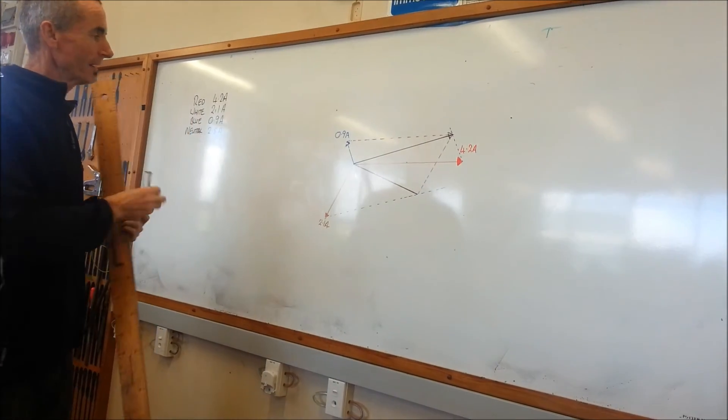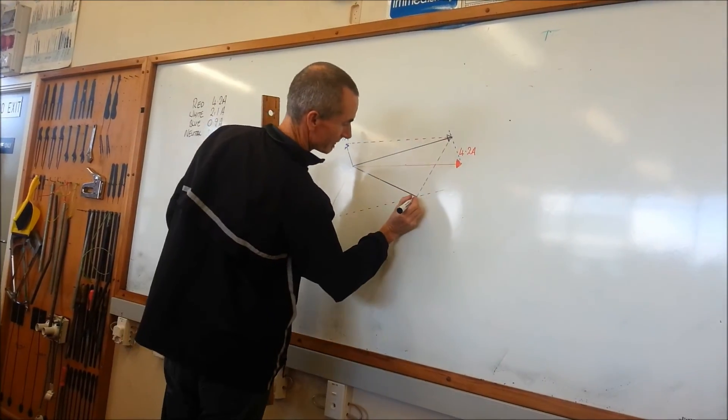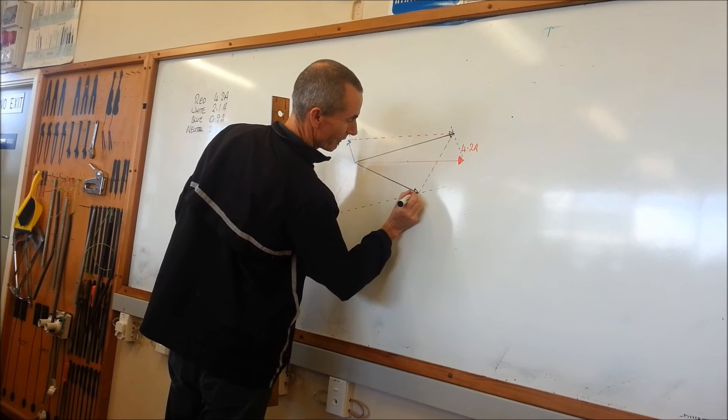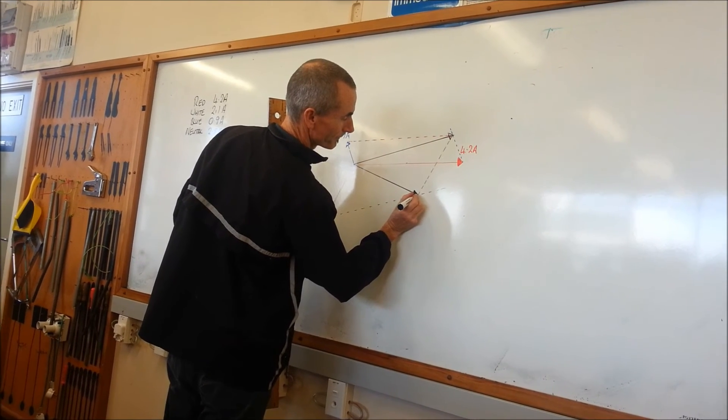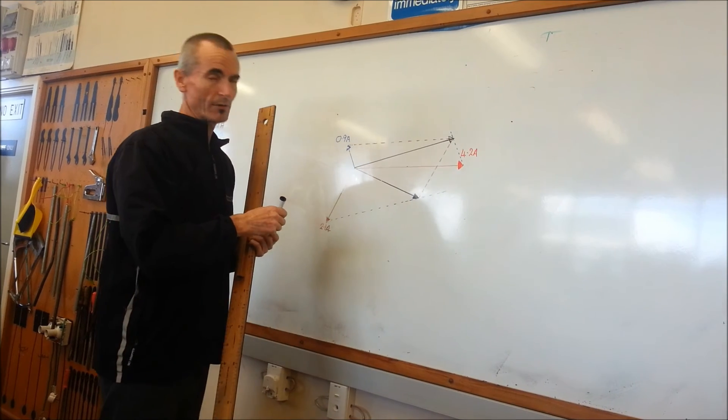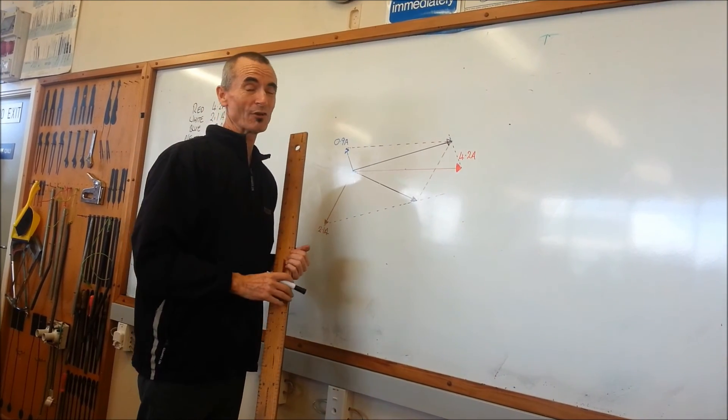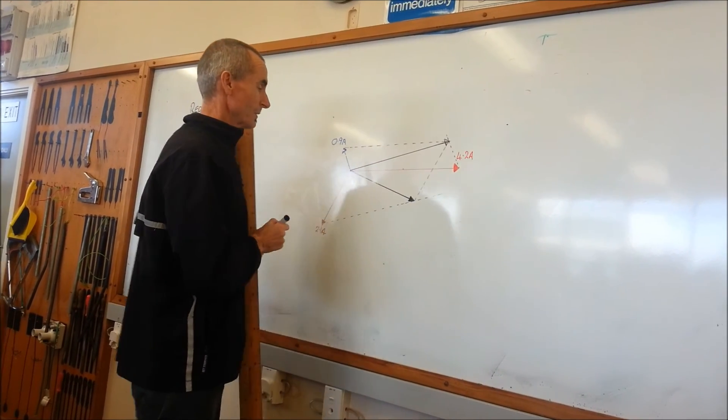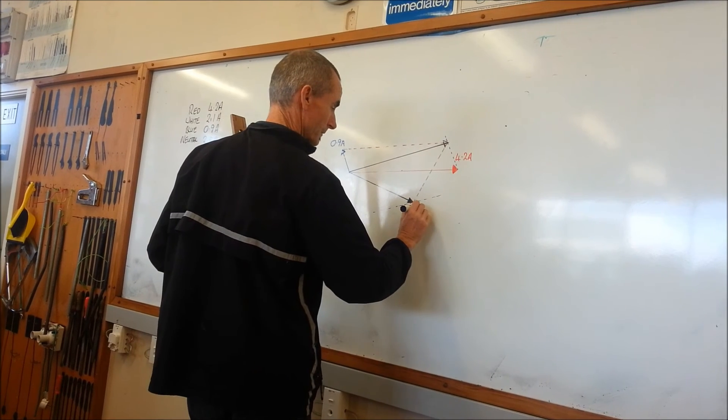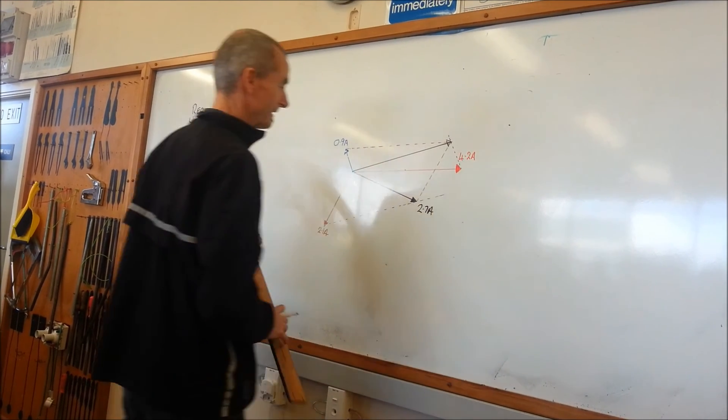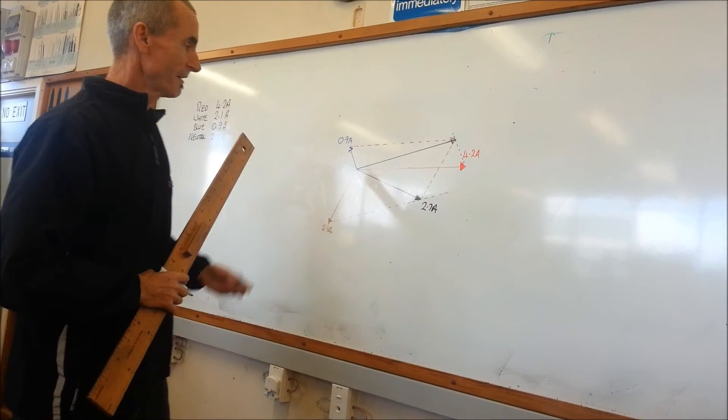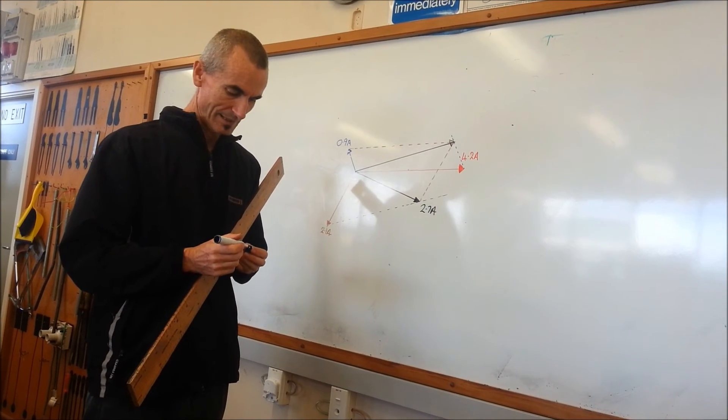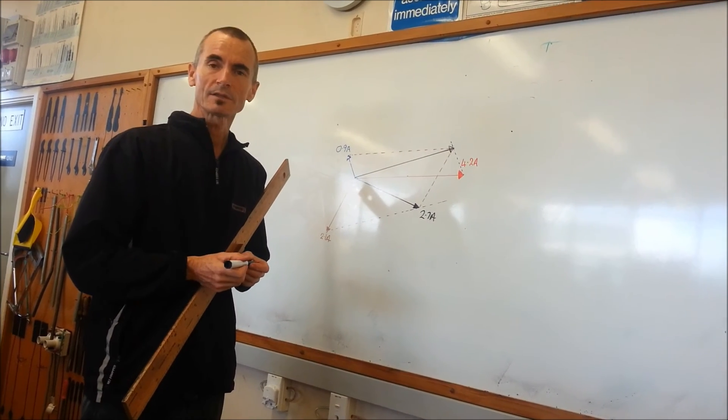Our calculation was 2.5, what we've drawn is 2.7. Now the variation can come about because it's not exactly 400 volts, it's not exactly 230 volts. But the measurement here we came up with is 2.7 amps and the reality was 2.5. So we're only talking 200 milliamps anyway. Close enough.